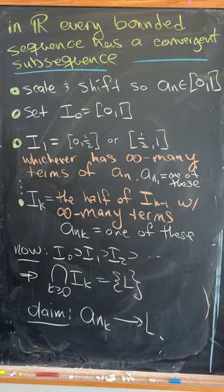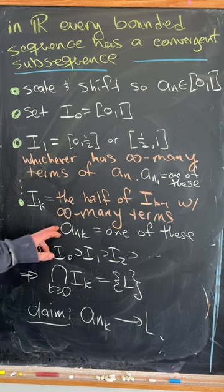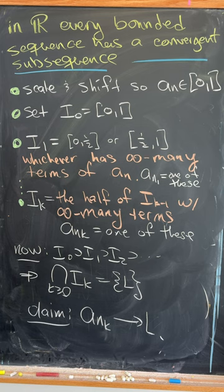Then we set a_n1 equal to any one of these infinitely many terms, and then we continue this recursively so that I_k is half of I_(k-1) with infinitely many terms, and then again a_nk is one of these terms.